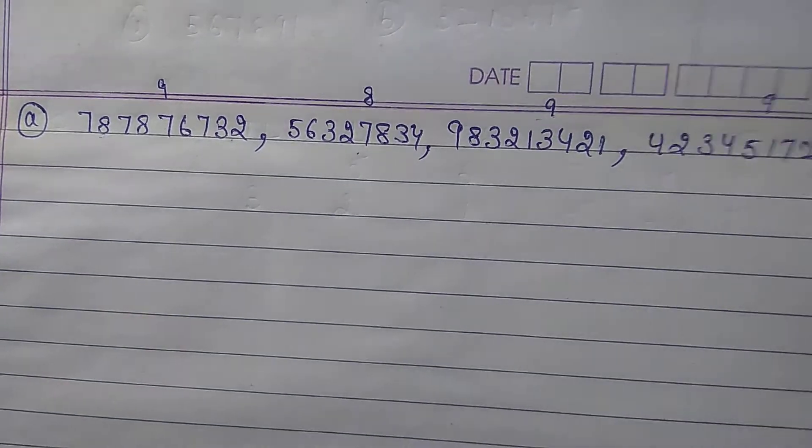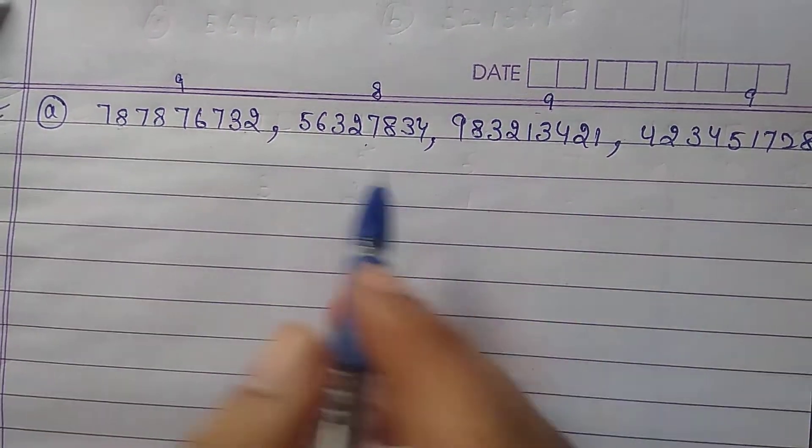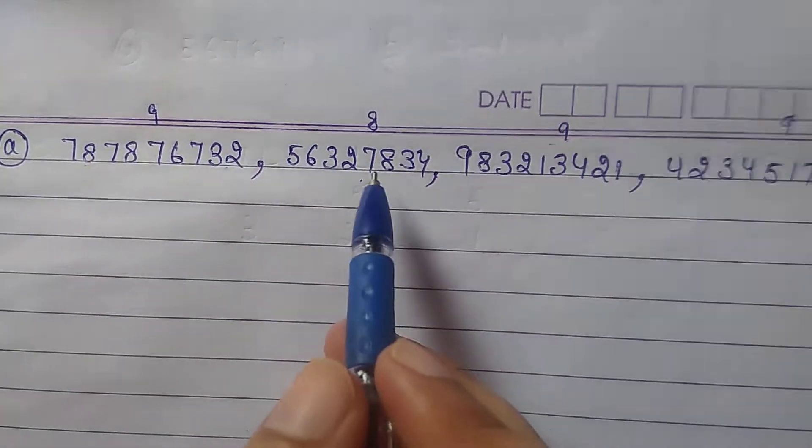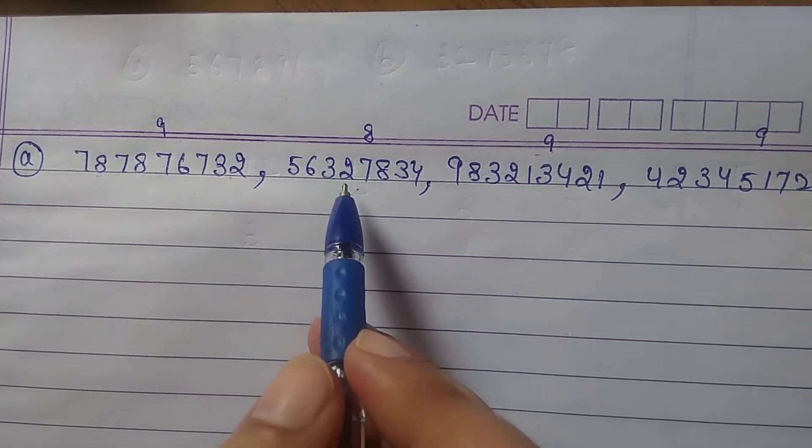Ascending order means increasing order. First of all, we will write down the smaller number. This numeral contains 8 digits. So that means first of all, we will write down this numeral.